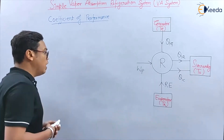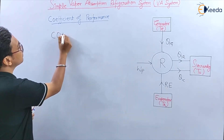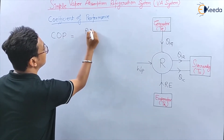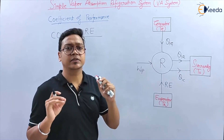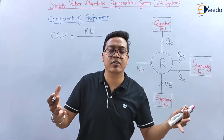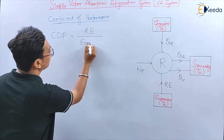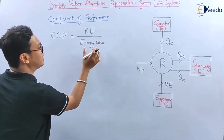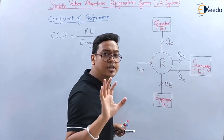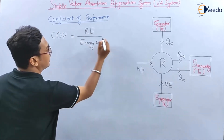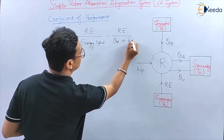Now let's see how to calculate the coefficient of performance of a simple Vapour Absorption System. You know what COP is — COP is the ratio of refrigerating effect (RE) divided by work input. Here you have to remember that work input is energy. So I can say COP equals RE divided by energy input. Why have I written energy input and not work input? Because in this system, pump work (WP) is also an input, and QG is also an input to the system. So we write: RE divided by (QG + WP).